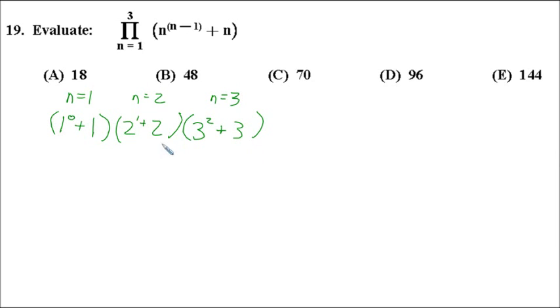So, these are actually very pretty small numbers. We just have to multiply three small numbers with each other. So, 1 to the 0 is, again, 1. Everything to the 0 is 1. Plus 1, that gives me 2. 2 to the 1st is 2, plus 2 is 4. 3 squared is 9, plus 3 gives us 12. And we just multiply that. And these two are 8. So, this is really just 12 times 8, and it's 96d.